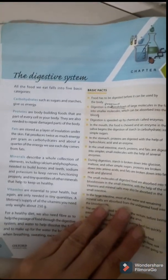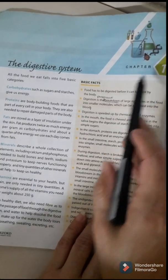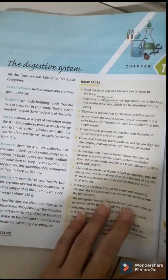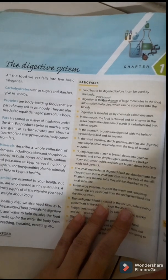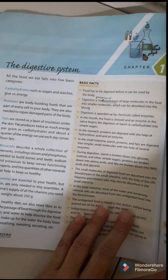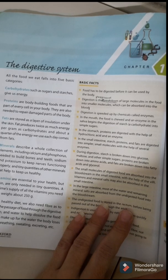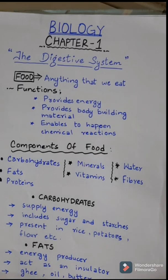Let's start the new book. Open your books on page 2 - Chapter 1: The Digestive System. This chapter belongs to the branch of science called biology. Biology is the branch of science which deals with the study of life, that is, of animals and plants.